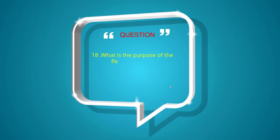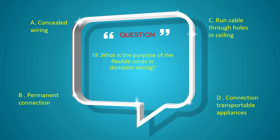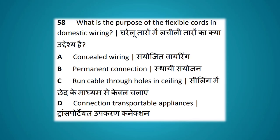What is the purpose of flexible cord in domestic wiring? Options: concealed wiring, permanent connection, run cable through holes in ceiling, connection of transportable appliances. The answer is connection of transportable appliances.